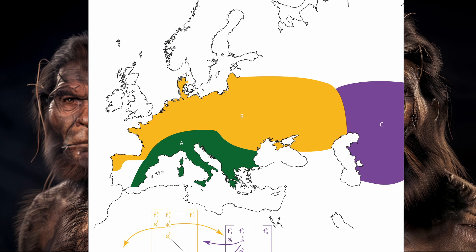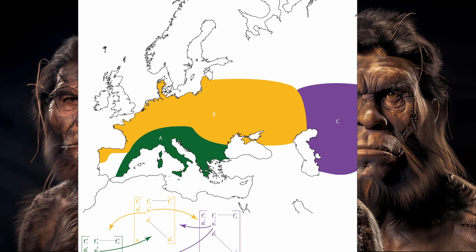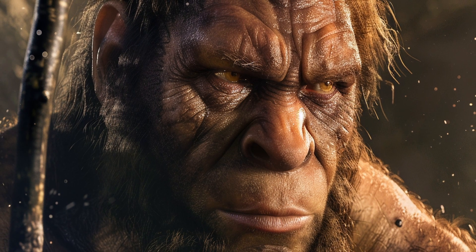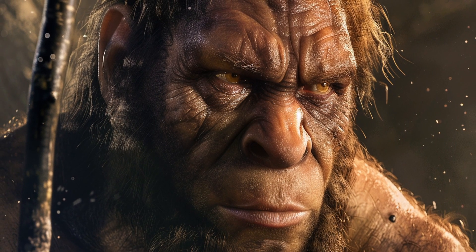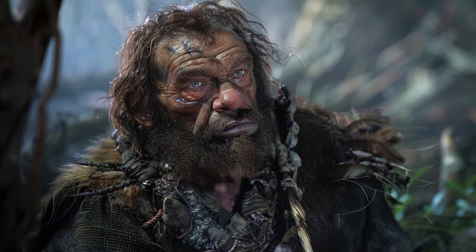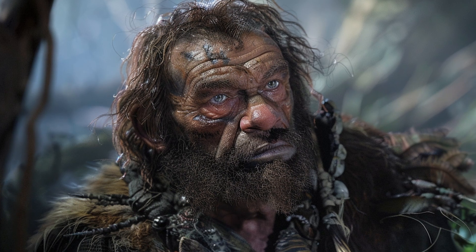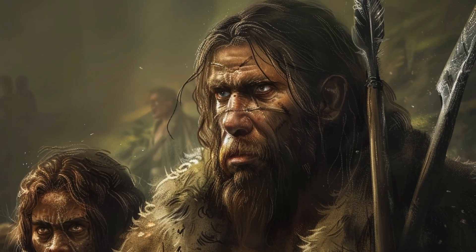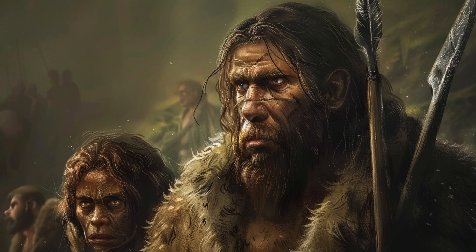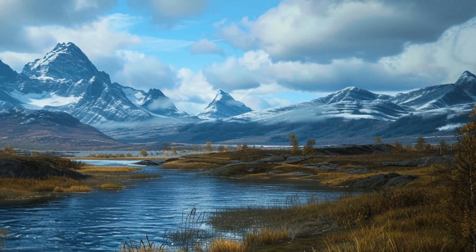Research indicates that Neanderthal populations in Europe were divided into three main subpopulations — southern, northern, and eastern Europe. Subpopulation A, southern Europe, resided in areas like Spain and Italy, considered a refuge zone during harsh climatic periods; they were the last Neanderthal group to disappear. Subpopulation B, northern Europe, inhabited regions like France and Germany and had a higher migration rate southward. Subpopulation C, eastern Europe, found in areas like Russia and Ukraine, had very low population density and high rates of endogamy.